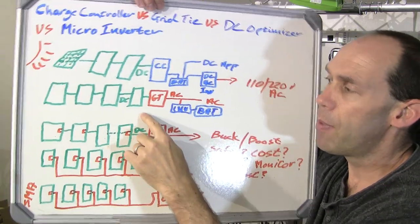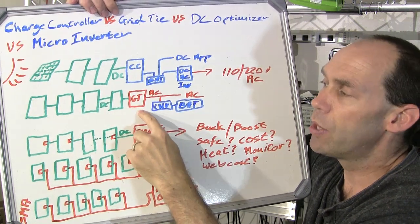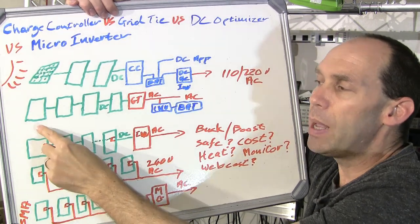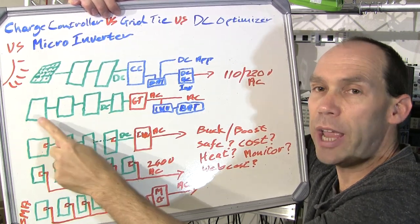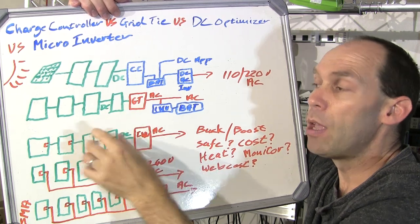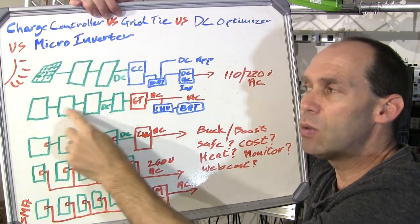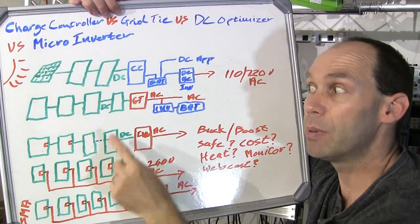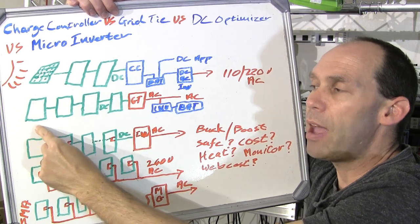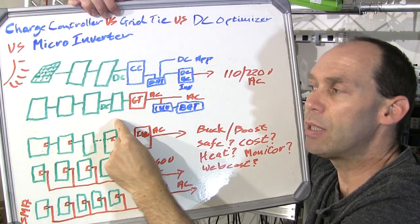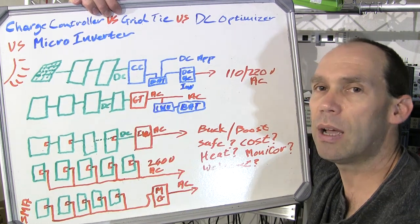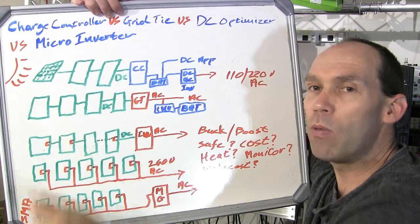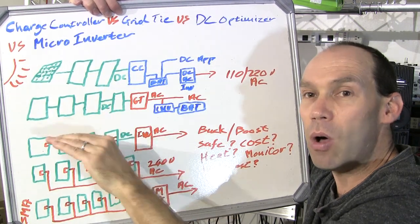Looking at the most common installations these days using grid tie inverters — what are the challenges with this setup? One of the big ones is that you've got a whole lot of solar panels chained together in series. Often you'll have multiple strings, because there's a maximum DC voltage allowed for your grid tie inverter, so you'd have one string in series and a second string also in series, then joined in parallel coming into your grid tie inverter. Now if you have any shading on any one or more of these panels, that potentially brings down the whole string.